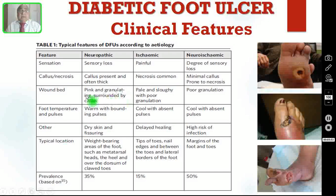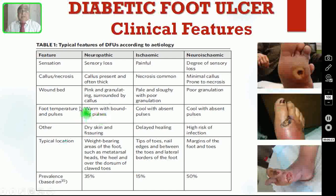Regarding the wound bed: in neuropathic ulcer it will be pink and granulating, surrounded by callus. In ischemic ulcer, the wound bed will be pale and sloughy with poor granulation tissue. In neuro-ischemic, there will also be poor granulation. Coming to foot temperature and pulses: in neuropathic ulcer the foot temperature is warm with bounding pulses, whereas in ischemic ulcer the foot is cool with absent pulses. In neuro-ischemic, the foot will also be cool with absent pulses.